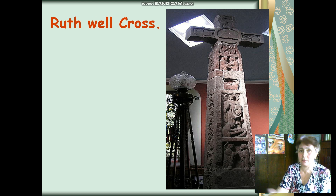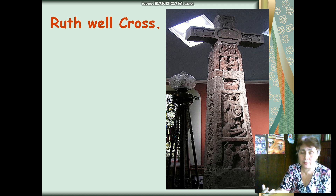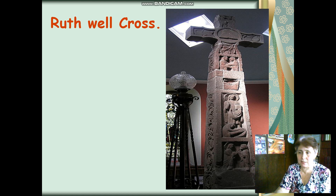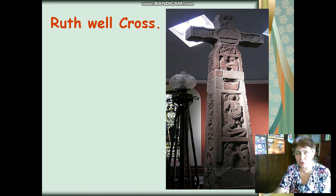The Ruthwell Cross from Scotland is one of two monuments of Old English. There are inscriptions in runic alphabet on the edges of these stones. When these inscriptions were reconstructed, they turned out to be part of the Old English poem 'The Dream of the Rood.' 'Road' does not mean the way — 'rood' means crucifix. This runic inscription contains some elements of the Apocalypse. The cross was smashed down by Presbyterian iconoclasts, and in 1823 it was re-erected. Now it is located in Ruthwell Church.